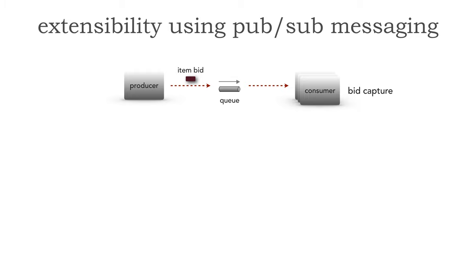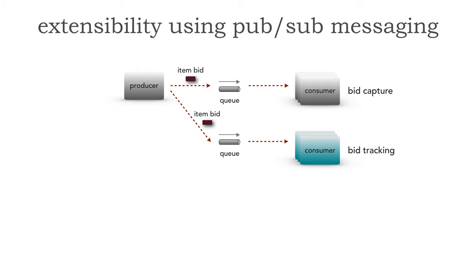Now, the problem is this. We have another requirement that we want to start tracking those bids — so we can see who's bidding, who's bidding a lot, and who's bidding frequently. So the producer says they can do that, and we add another queue for bid tracking and then modify the producer to also send those items over to that second queue.